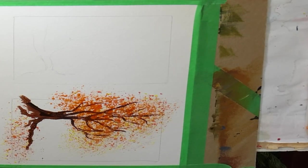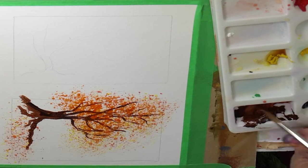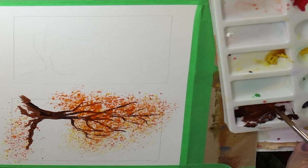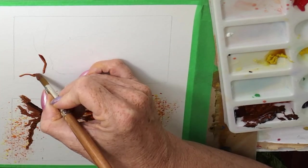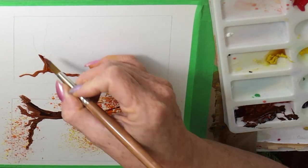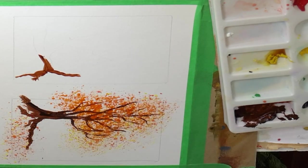So the first thing I'm going to do is a trunk. So I've got a bit of burnt umber and a bit of burnt sienna and there's a little bit of purple in there and I'm going to paint in the tree trunk.